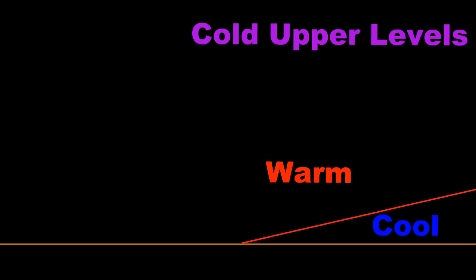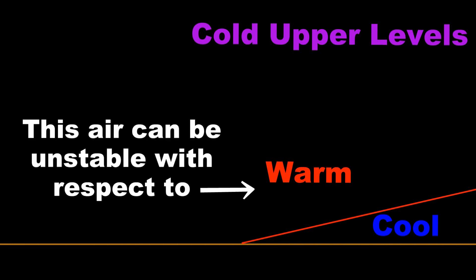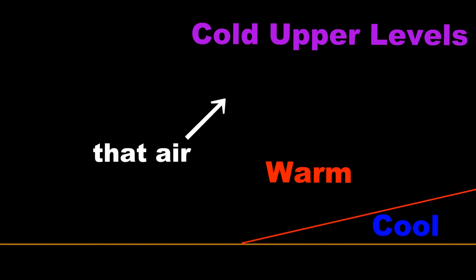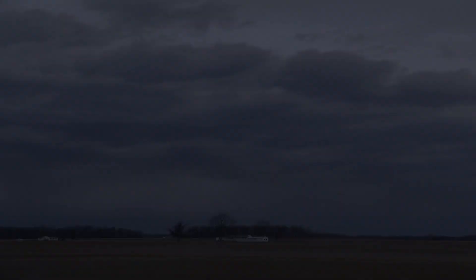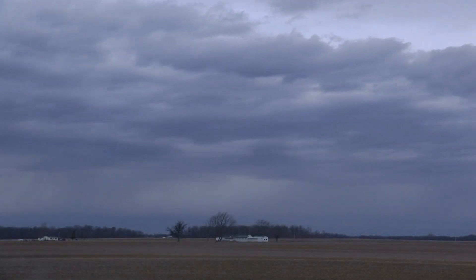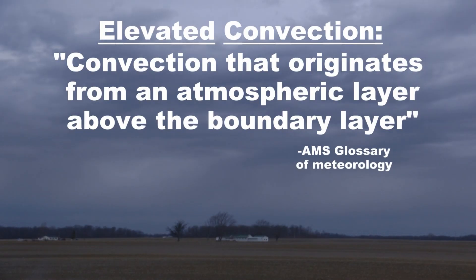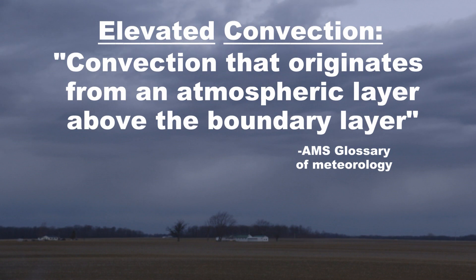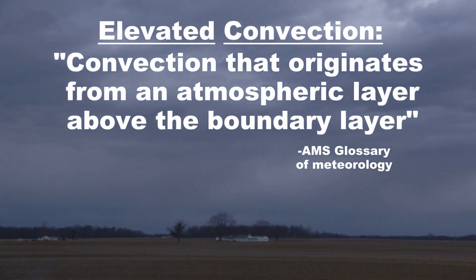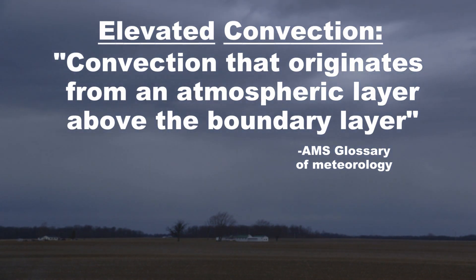However, the warmer air above a stable layer is different. With respect to the cold upper atmosphere, these parcels are unstable — sometimes unstable enough for thunderstorms. And that leads us to the definition of elevated convection: convection that originates from an atmospheric layer above the boundary layer.